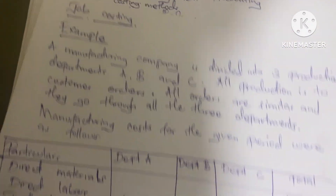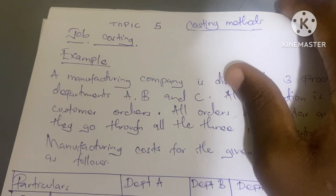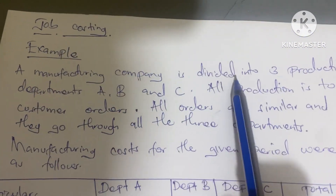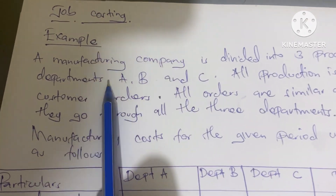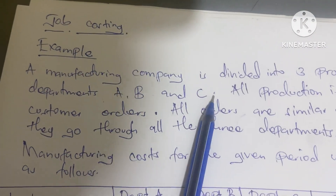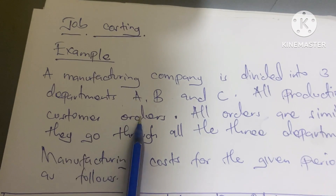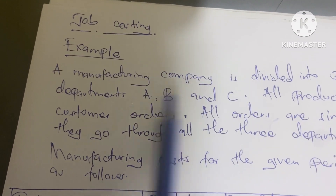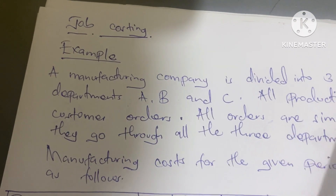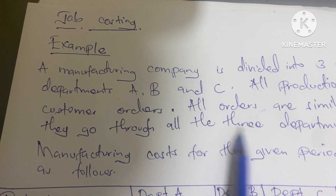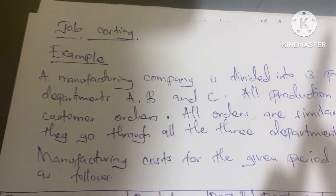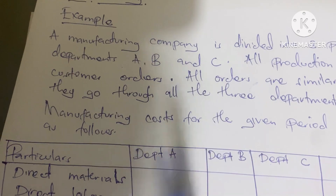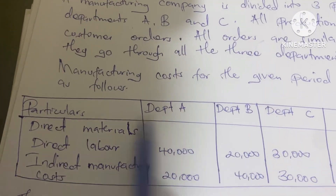Let's look at an example in job costing. A manufacturing company is divided into three production departments: A, B, and C. All production is for customer orders — they only produce when they receive orders, meaning they do not stock up. All orders are similar and go through all three departments.